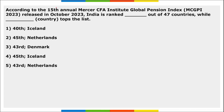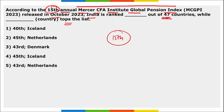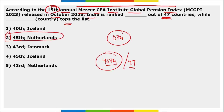Next, according to the 15th Annual Mercer CFA Institute Global Pension Index released in October, India is ranked 45th out of 47 countries, while Netherlands has topped the list. Correct that option here.